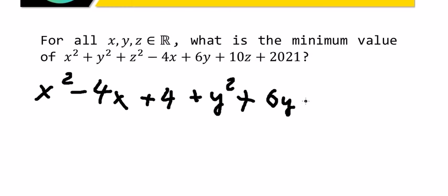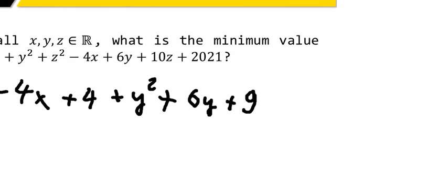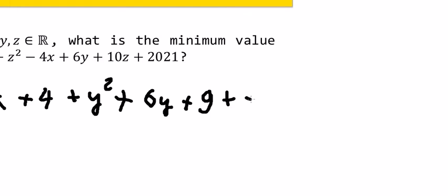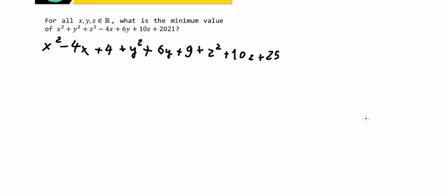so that means we need to have number 9. Next, z square. We can put z square plus 10z. For number 10, we have number 5 and number 2, so that means we need to have 25. Because we need to have this number, that means we need to minus number 4, minus number 9, and minus number 25.